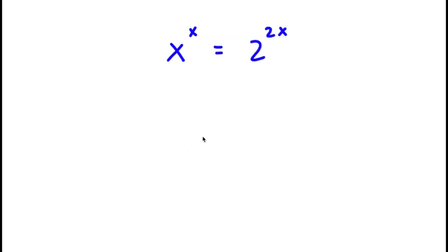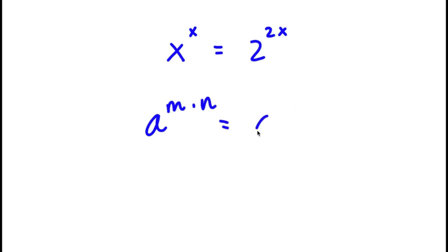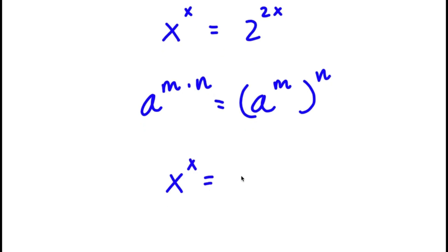Hey guys, welcome back to Click Academics. In today's video, I'm going to be teaching you guys how to solve this exponential equation. I have x to the power of x is equal to 2 to the power of 2x. If I have something in the form a to the power of m times n, this is the same thing as a to the power of m to the power of n. So 2 to the power of 2x, I'm going to rewrite that as 2 to the power of 2 to the power of x.